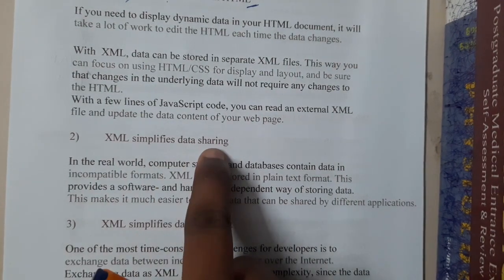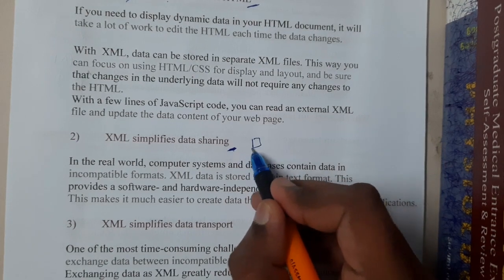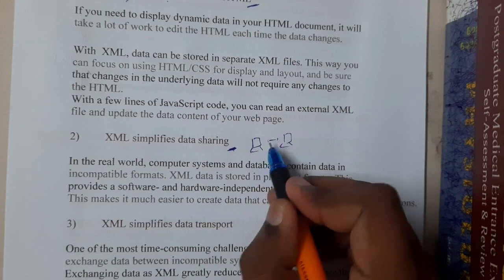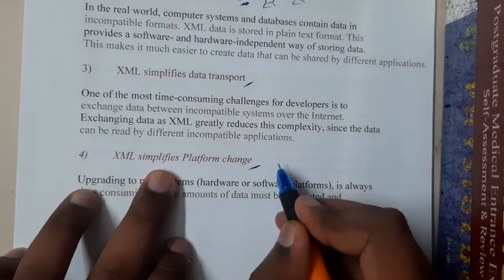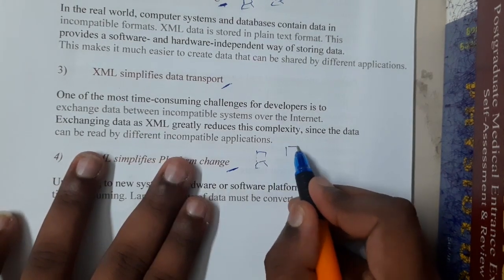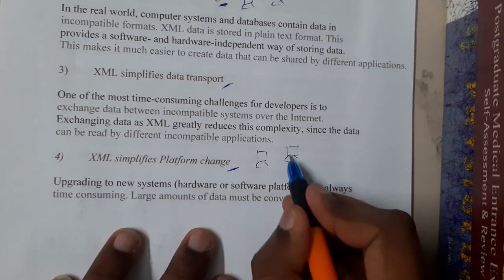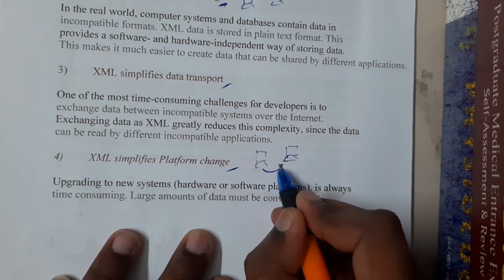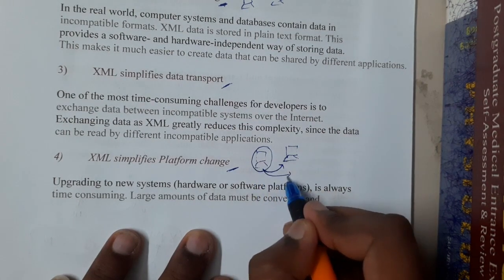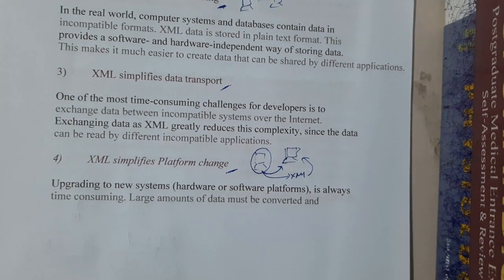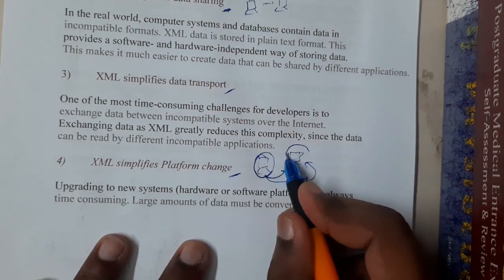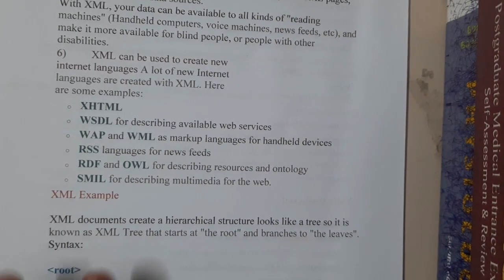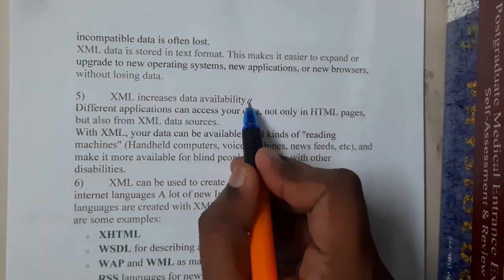XML simplifies data transfer and sharing. Data can be transferred from any device to any device. For platform changes — say you are using Apache Tomcat locally and your hosting provider is elsewhere — you can convert your storage data into an XML file, transfer it, unzip it, and use it. It doesn't depend on any platform, whether you're using macOS or Windows or Linux. The XML file will have no issues.